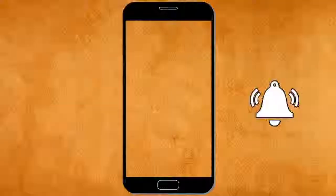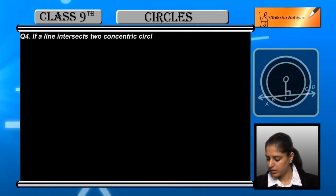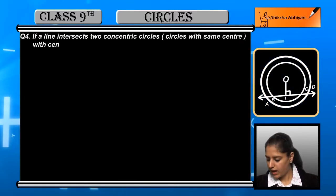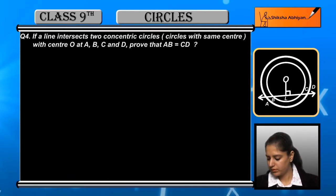Question number 4: If a line intersects two concentric circles (circles with same center) at points A, B, C, and D, prove that AB equals CD.